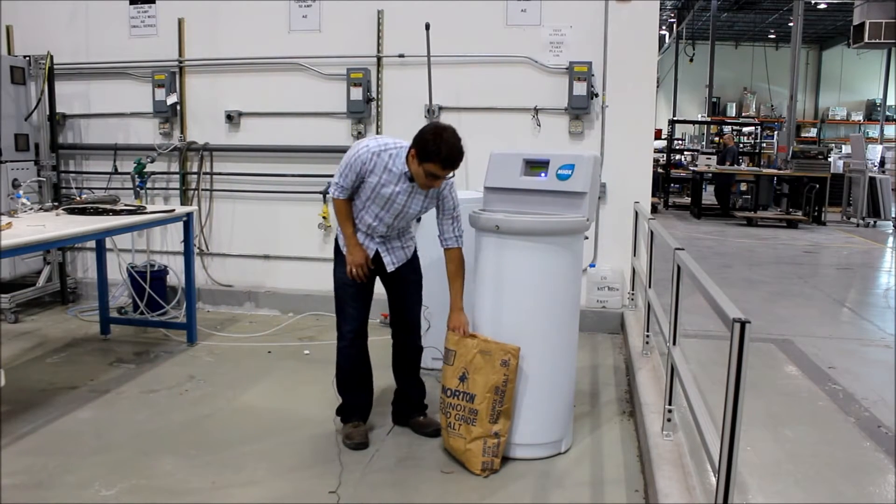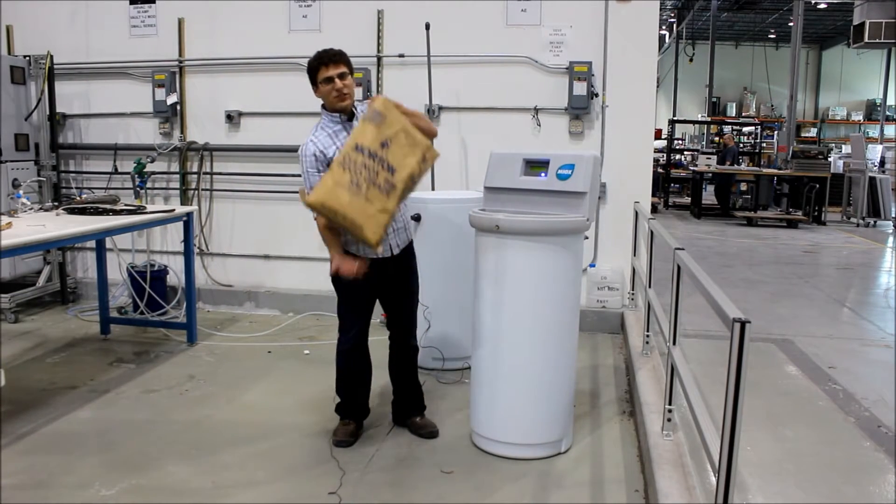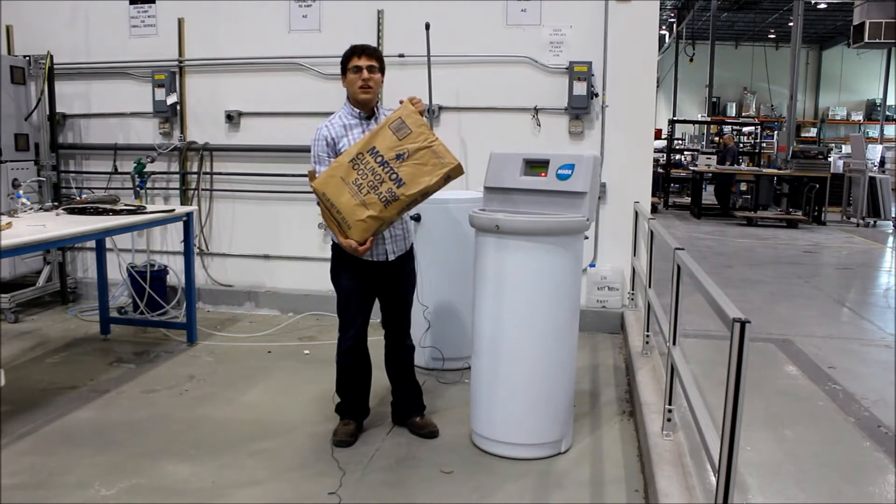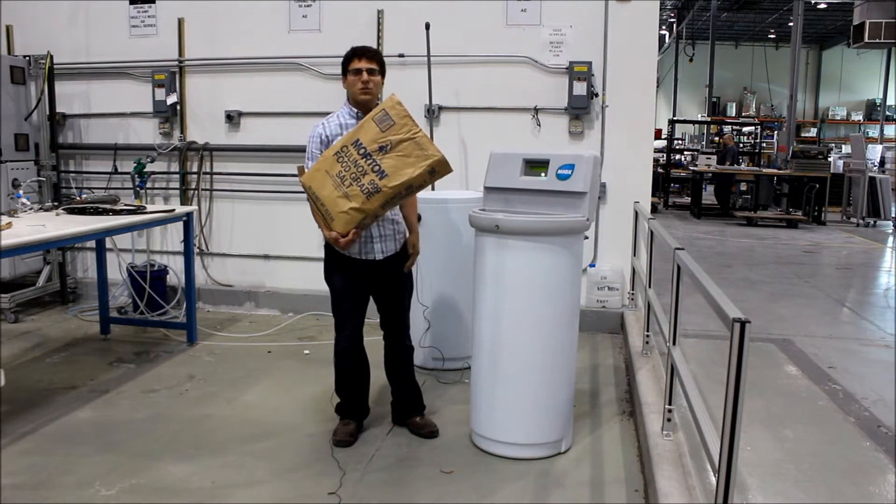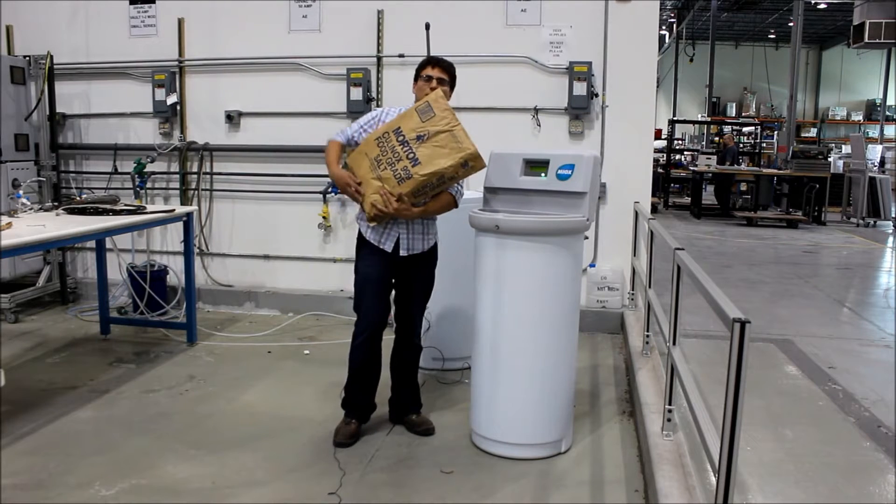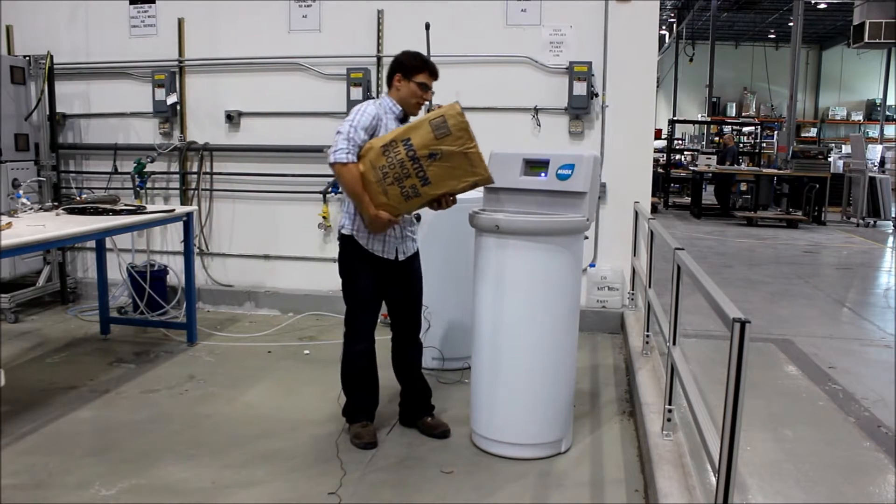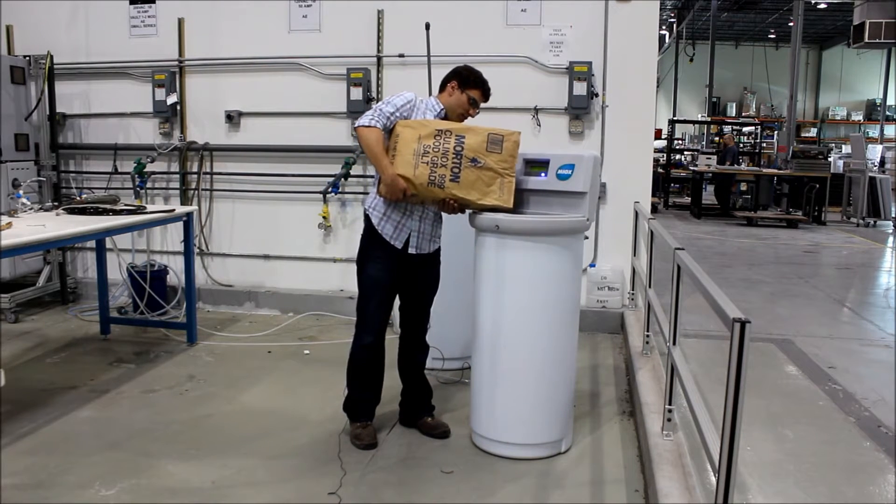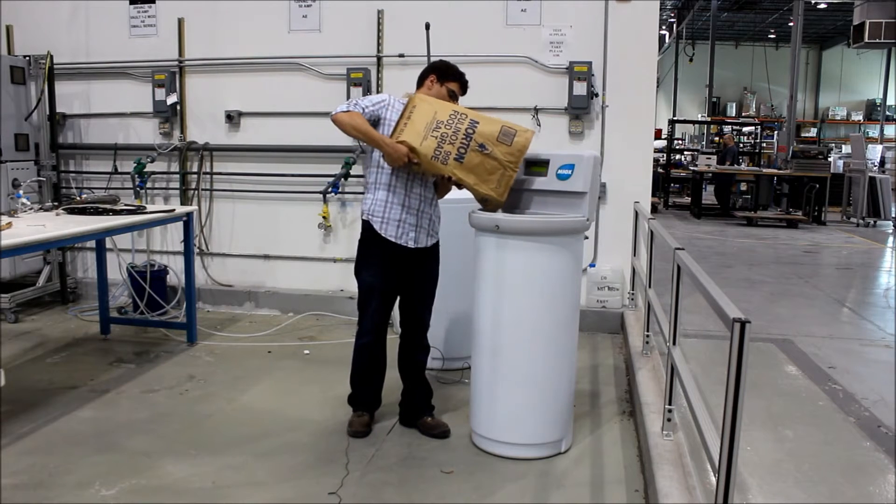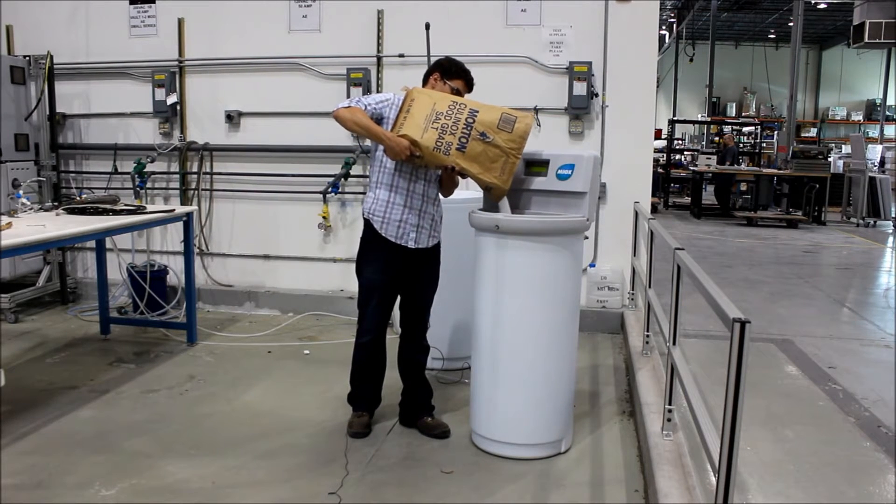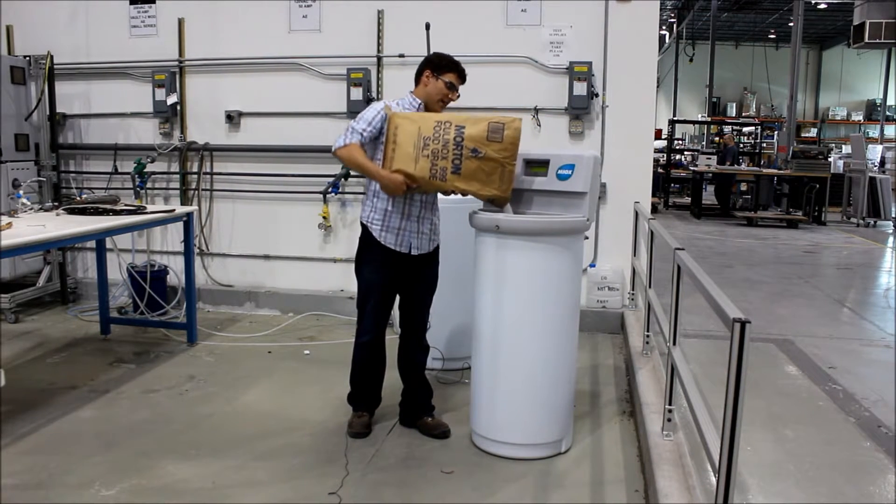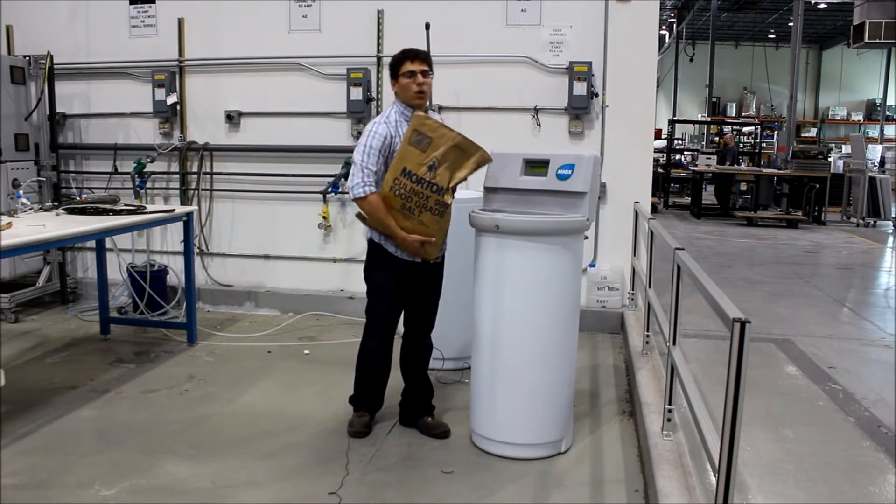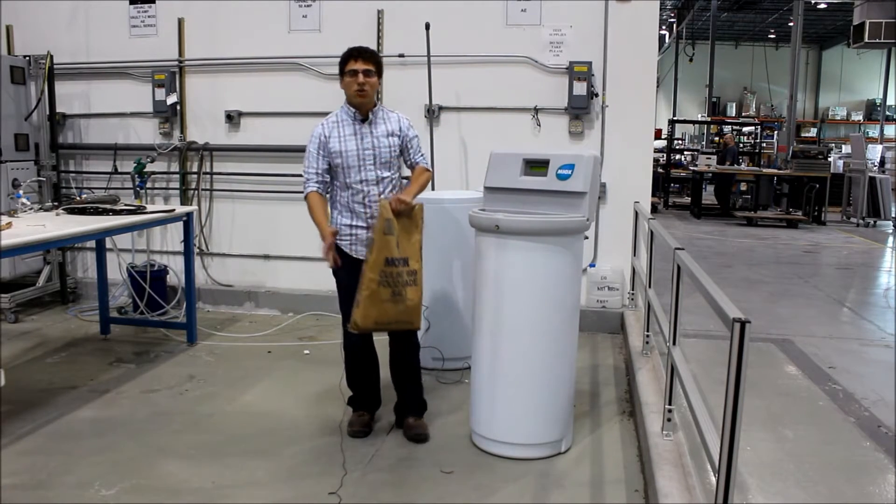So loading salt is easy. You use pretty much standard table salt. We like to use Morton's Cullinox 999, but other salts will do. And all you have to do in this unit is load it into the integrated brine water tank, which the unit sits on top of. So you can see I'm pouring the salt in, and as it goes in it gets mixed with water down below and forms a saturated brine.